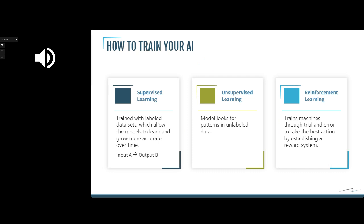Look for a problem that you have, then start thinking about whether artificial intelligence will actually facilitate the solution. This is where you start thinking about what tools are available. I'm going to talk first about how to train your AI — these are ways that artificial intelligence is trained, essentially three different learning models.